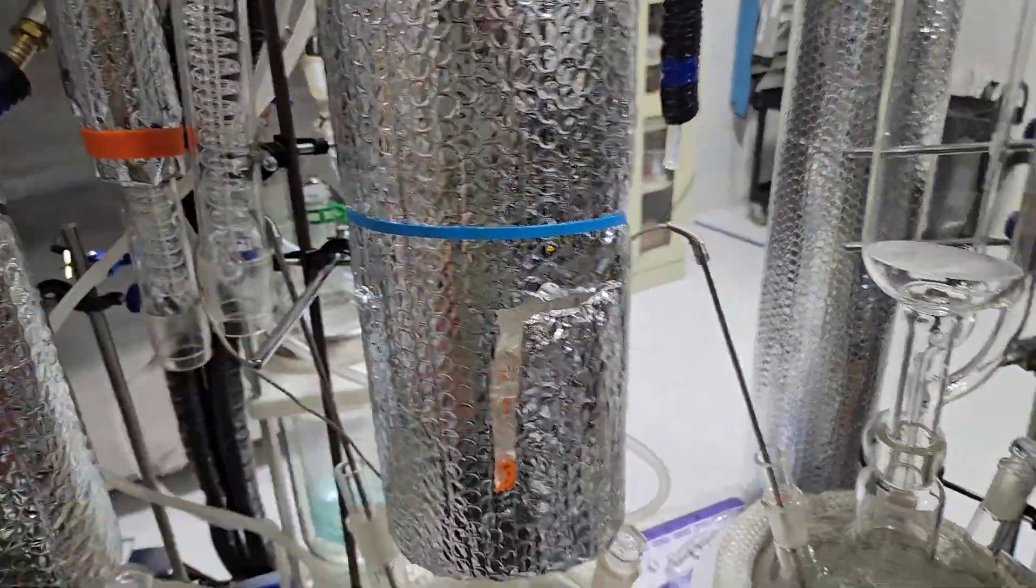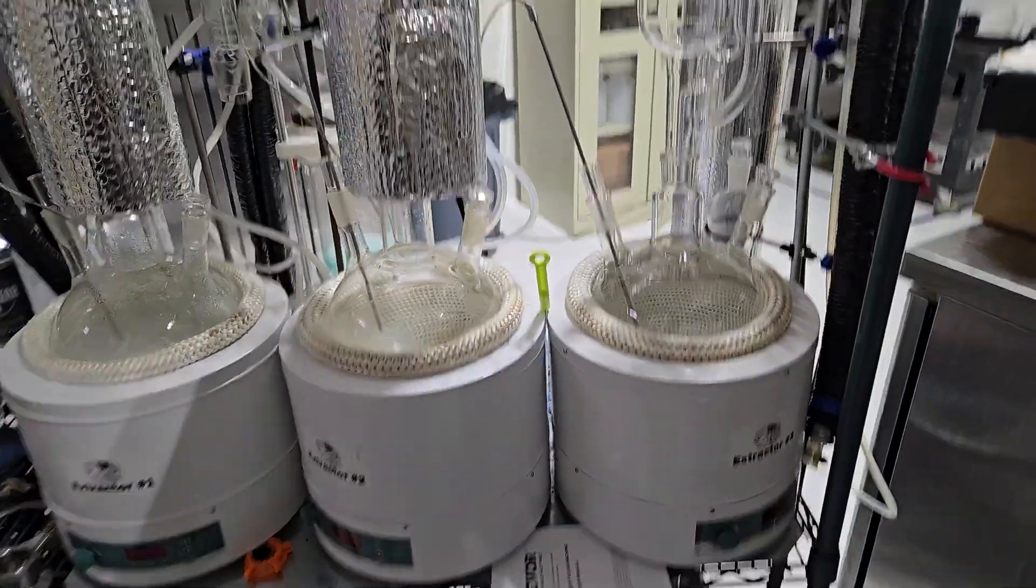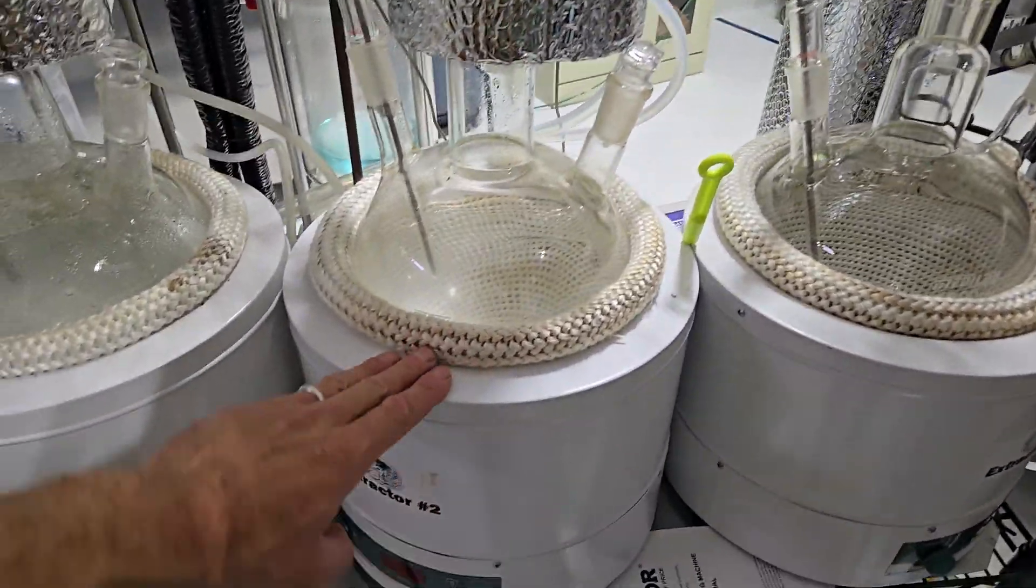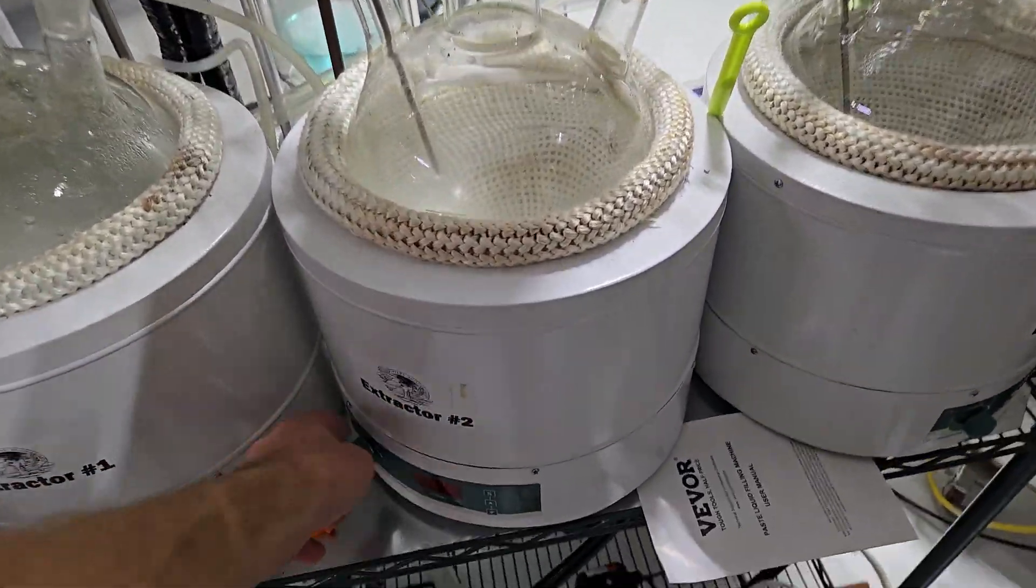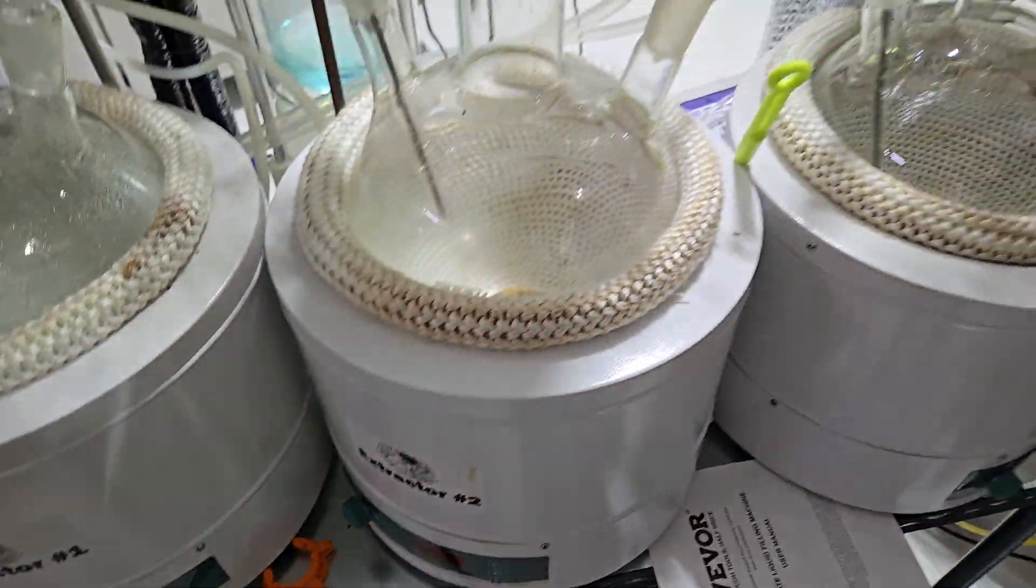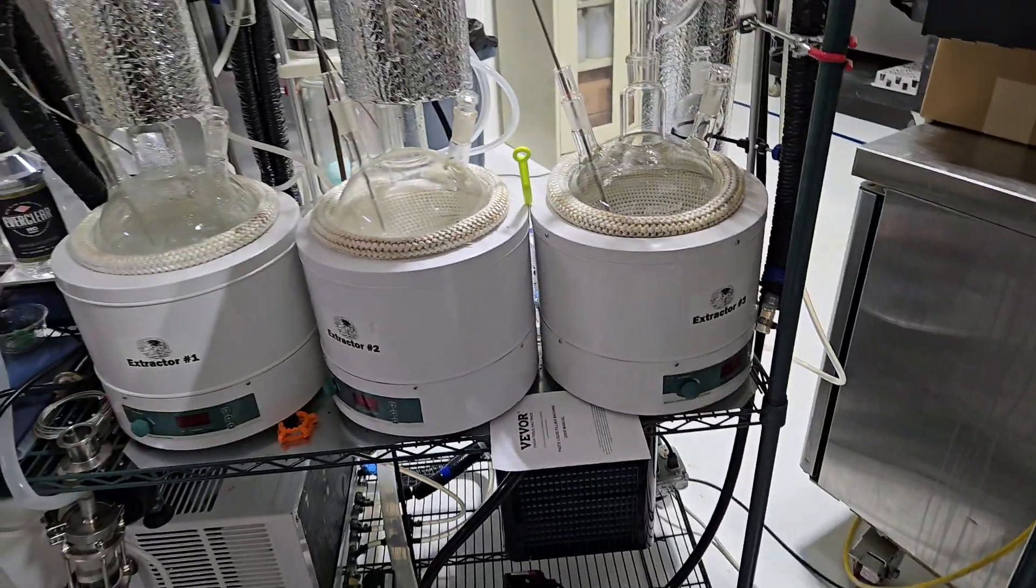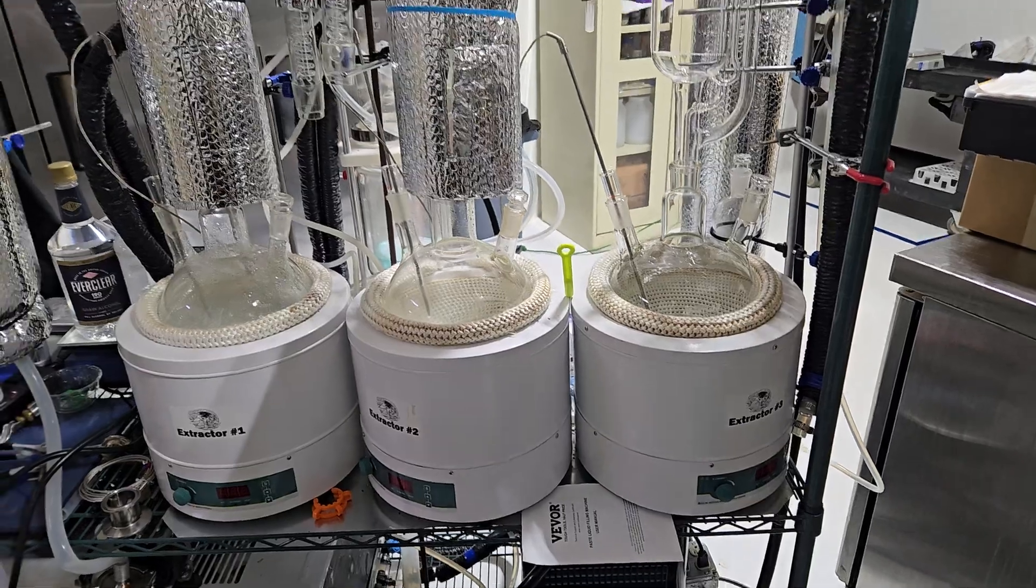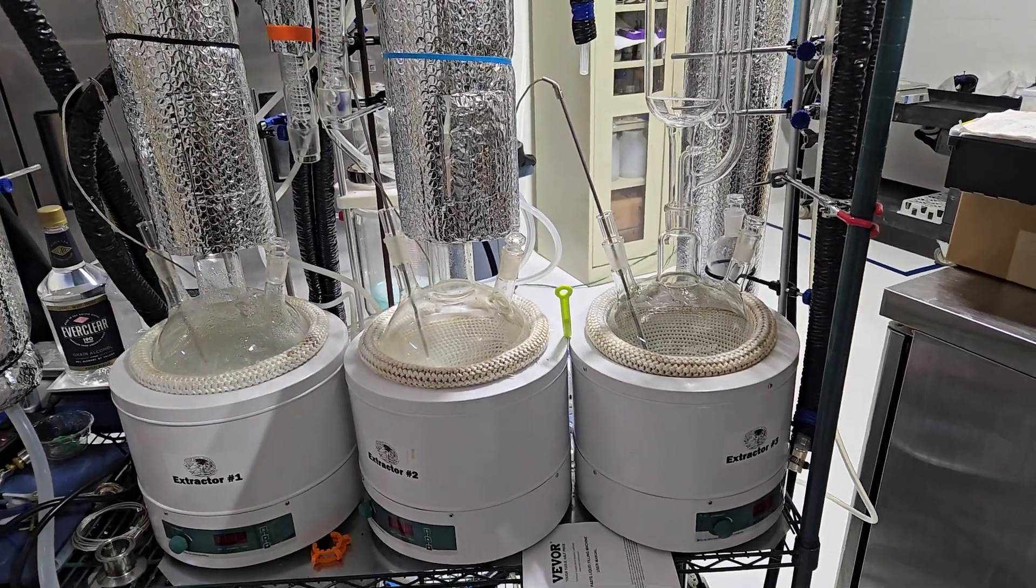We're also using stir plate mantles. That's important—you want to have the stir function. That just makes sure you have a nice steady boil, reduces bumping which is like an explosive boiling that might occur.